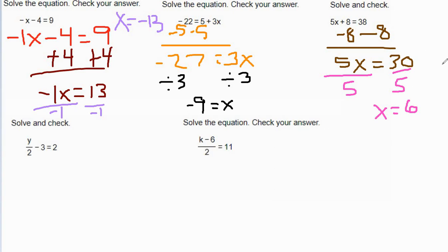Bottom left one, we have a fraction: y over 2 minus 3 equals 2. The stuff that's on the same side of the letter but not touching it is that negative 3. I'm going to add 3 to both sides. That gives me y over 2 equals 5. The opposite of division is multiplication. We're going to multiply both sides by 2. That's going to give us 10 as our answer.